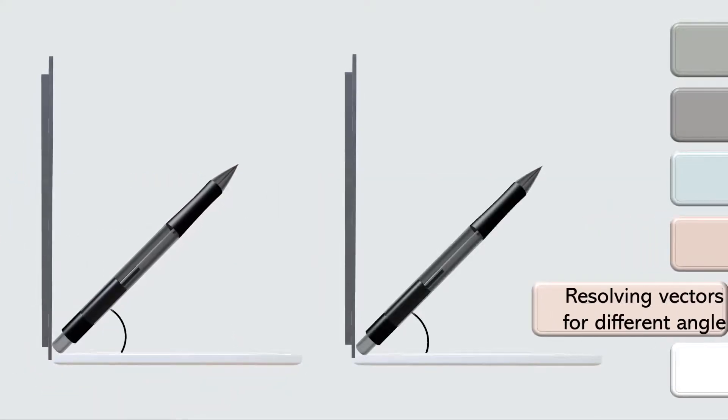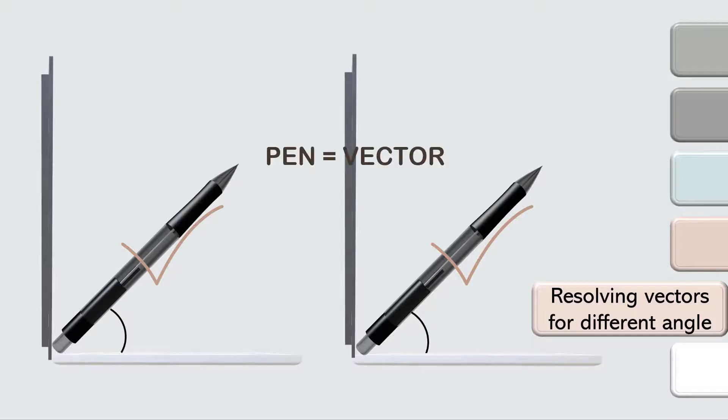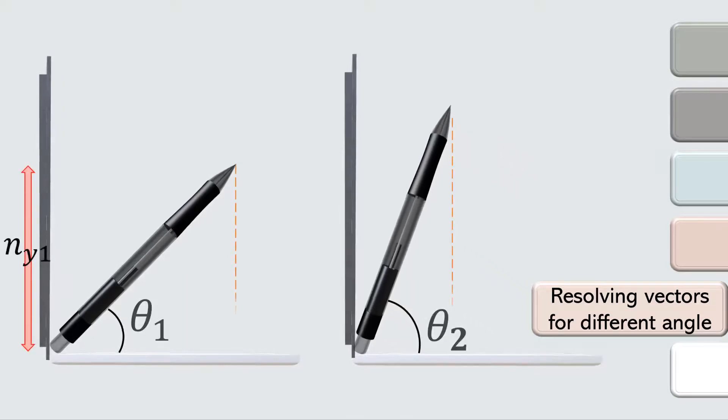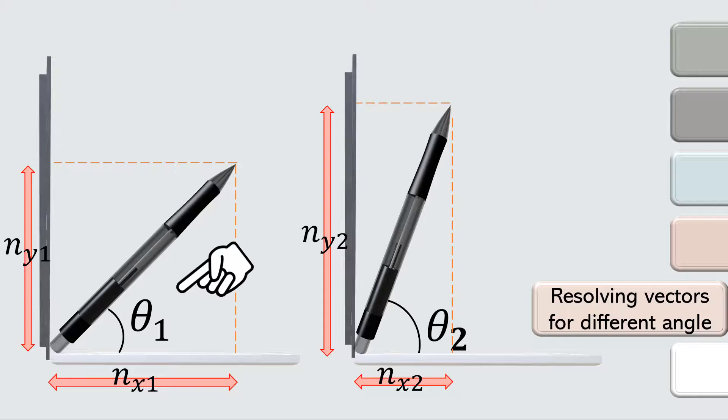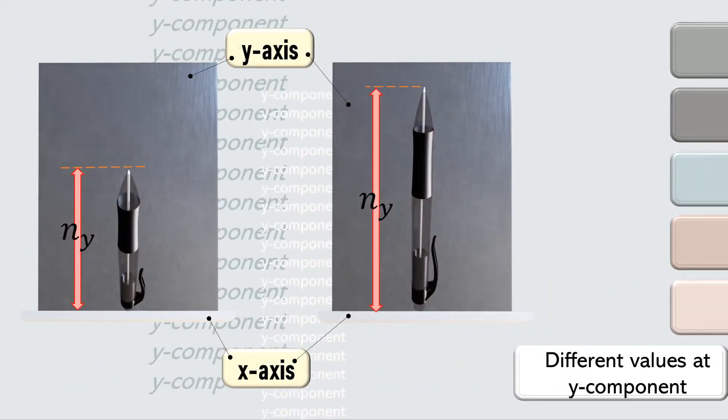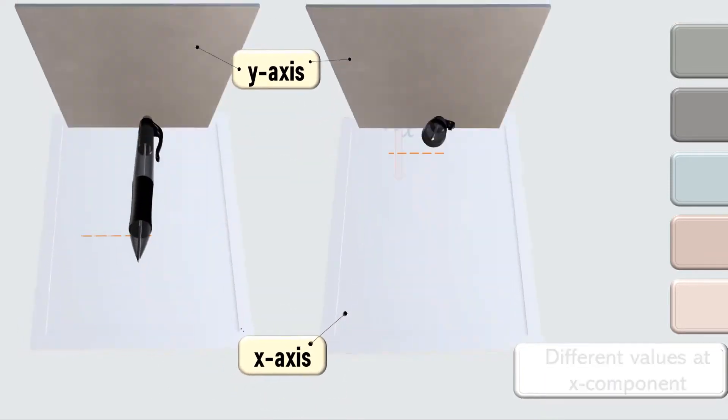When we try to resolve a vector quantity, the angle is really important. Here, we have the same pens, which represent the same magnitude of a vector. But when it is located at a different angle, each component varies. Theta 1 is smaller than theta 2, and n_y 1 is much shorter than n_y 2. But look at what happened to the x components - n_x 1 is longer than its corresponding. Okay, this is the view from the front, and this is the view from the top.